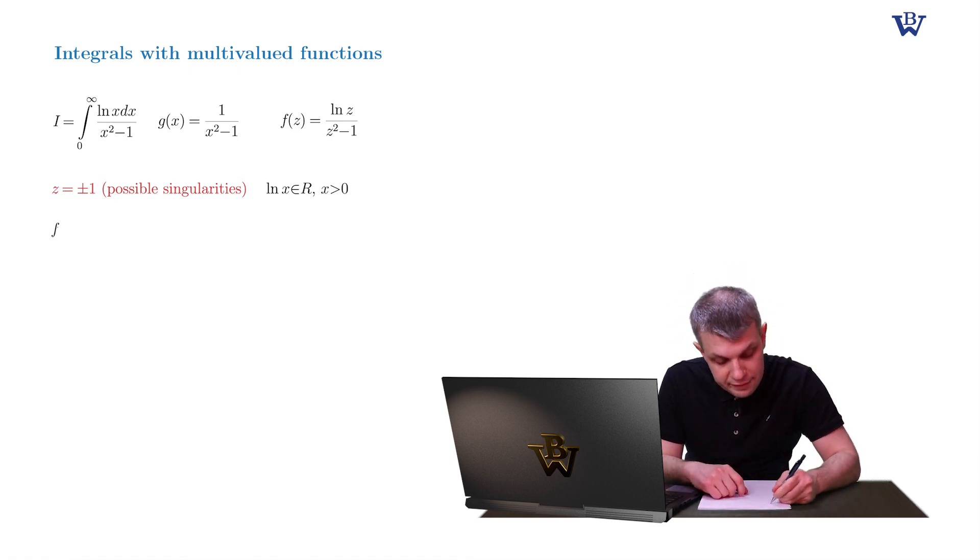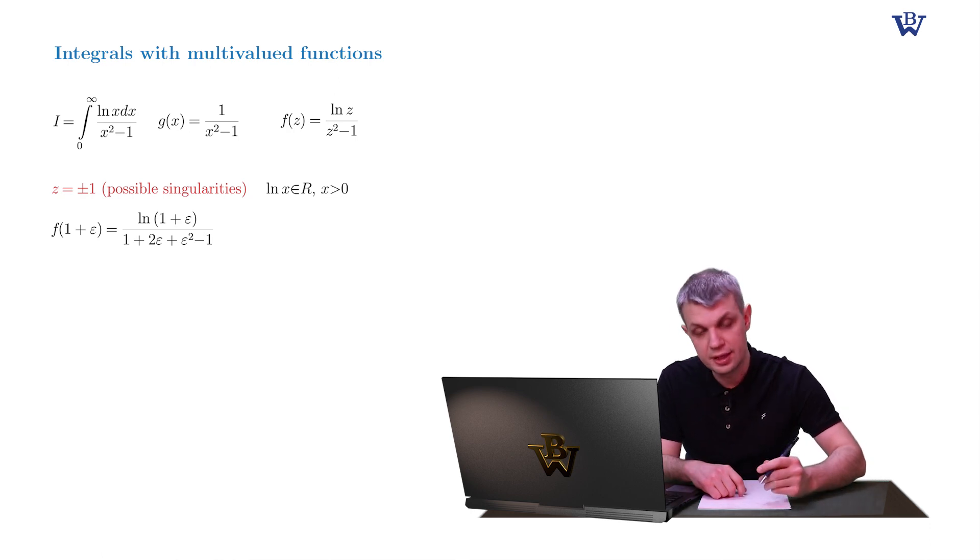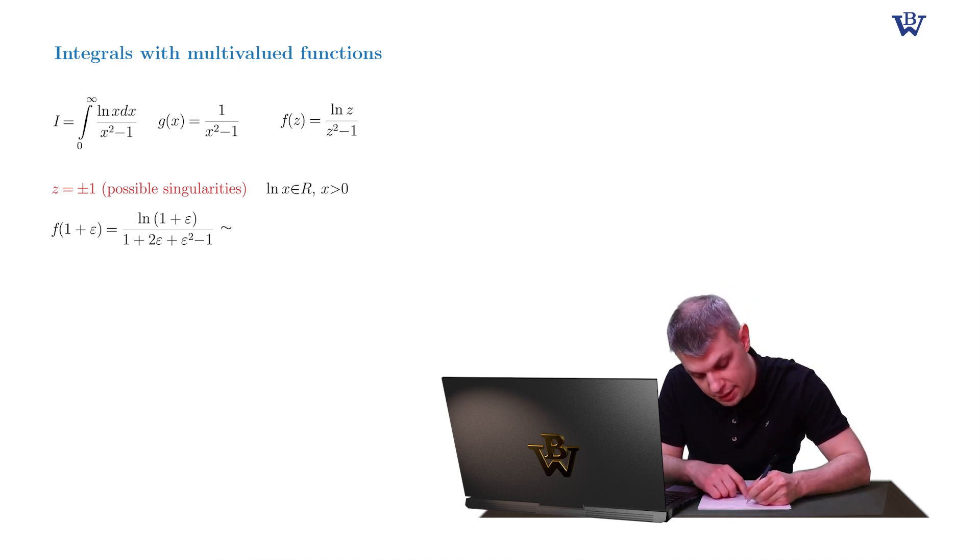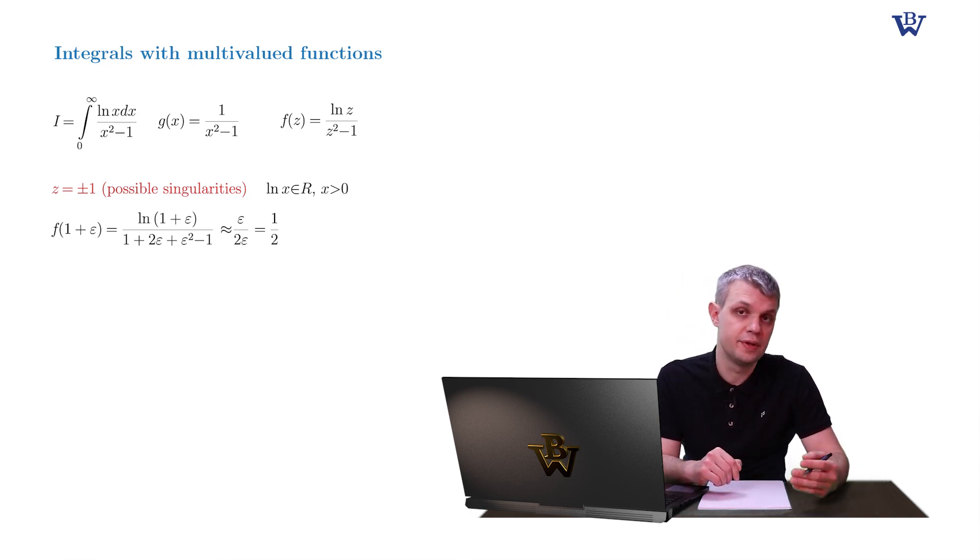Next, f of 1 plus epsilon equals log of 1 plus epsilon divided by 1 plus 2 epsilon plus epsilon squared minus 1. Expanding the log function in denominator and denominator, we obtain epsilon over 2 epsilon, which gives us one half. So indeed, our integrand is well defined at point z equals 1.